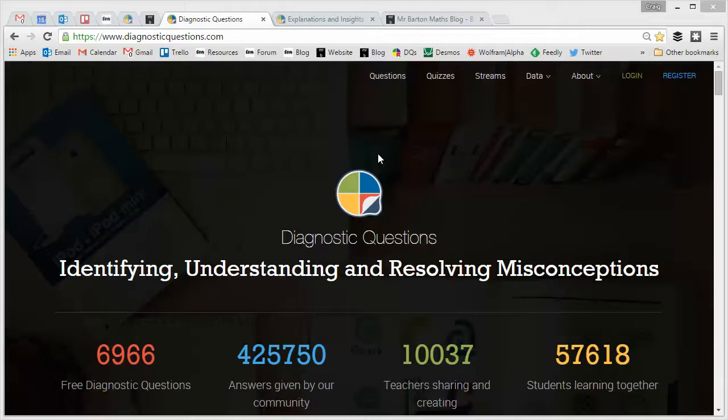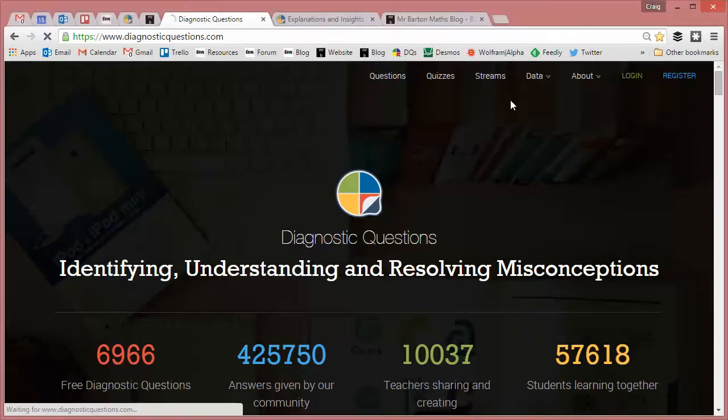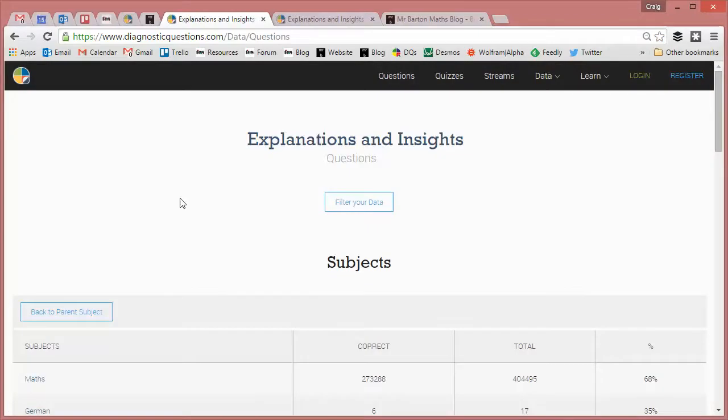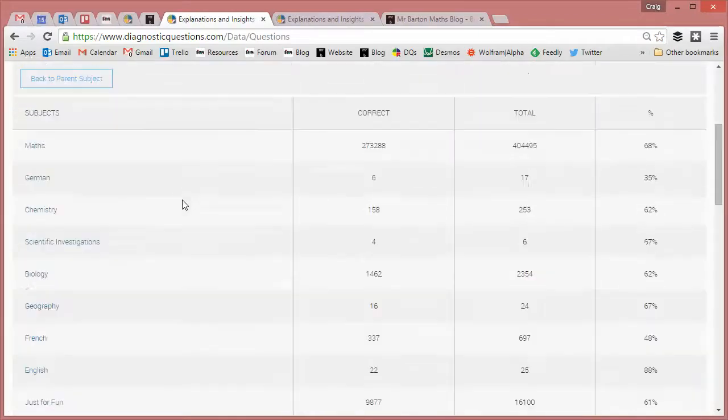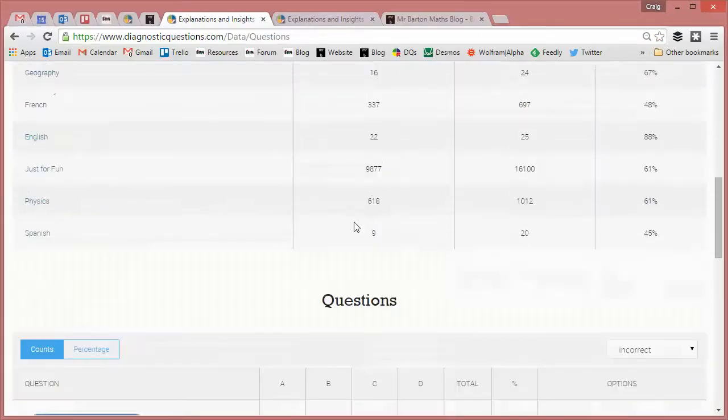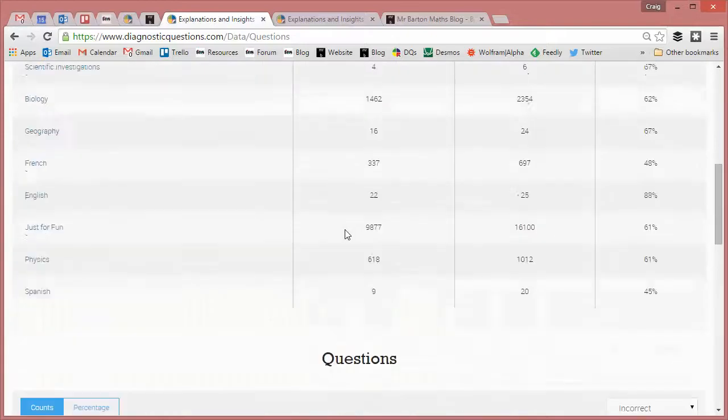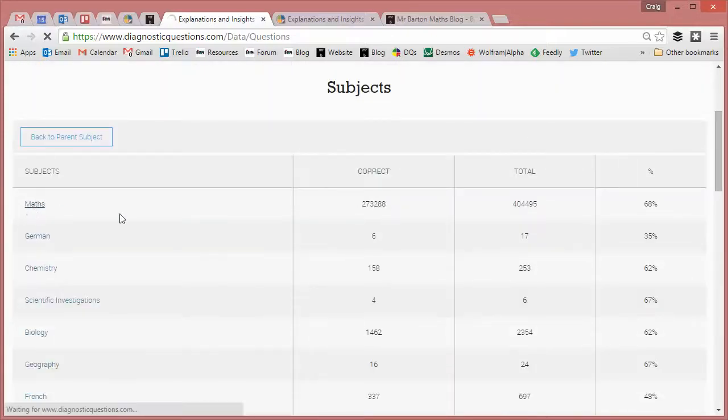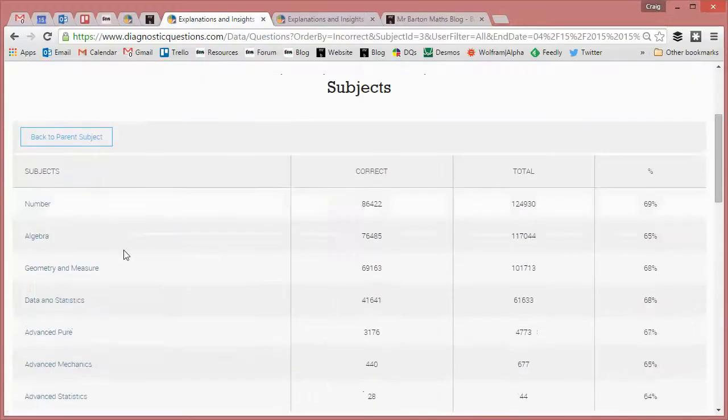Specifically the questions kids are getting wrong. The best way to do this is go to data and go to questions. This takes you to a data page that has the success rate of every single topic on the website.